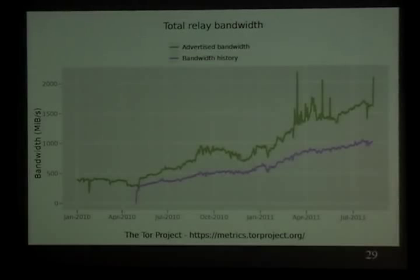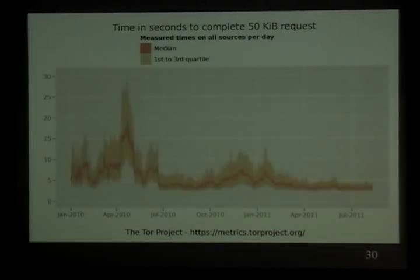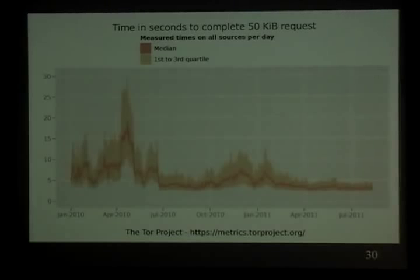We should look at capacity, not just the number of relays, since some relays are very fast and some are very slow. TOR clients automatically prefer faster ones for load balancing. We're pushing something like one gigabyte per second of traffic on the internet on average. Networking professors freak out when I show them this graph because if capacity is anywhere near the amount of load, the network will have horrible performance problems — certainly something we've been wrestling with.